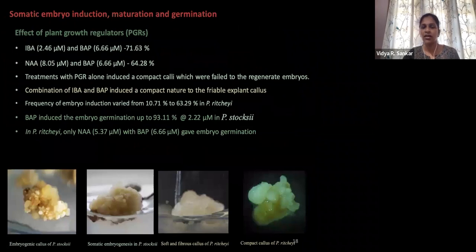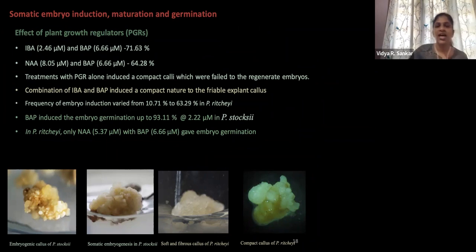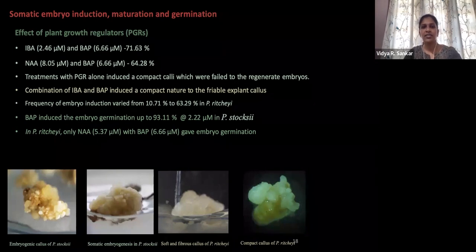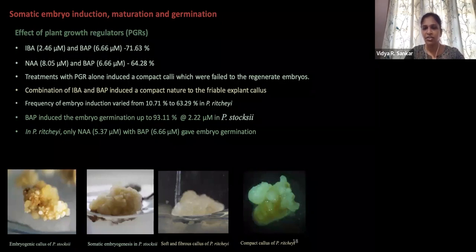After callus multiplication, we went for embryo induction, maturation, and germination. We tried different kinds of plant growth regulators. For stocksii, we got better response with IBA and BAP combination, which induced about 71.63% somatic embryos, whereas NAA and BAP gave 64.8%. In ritchiei there was no sign for any embryogenesis. We shifted the induced embryos into MS media with BAP alone at 2.2 micromolar, which gave a better germination response.